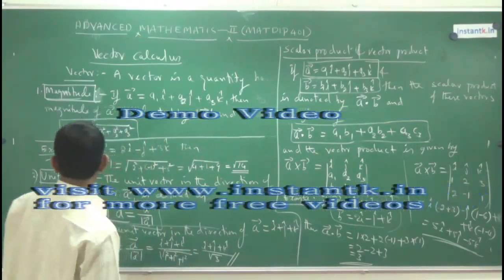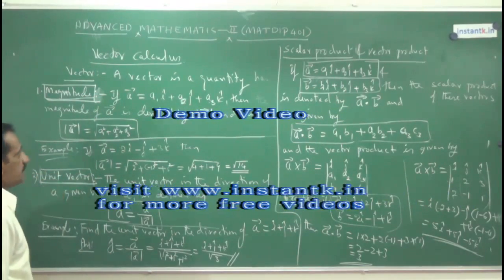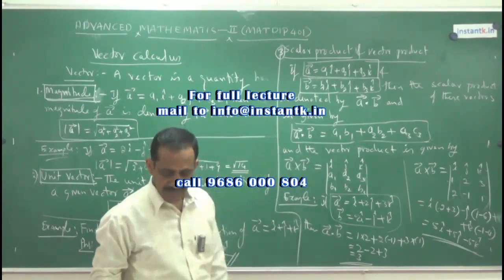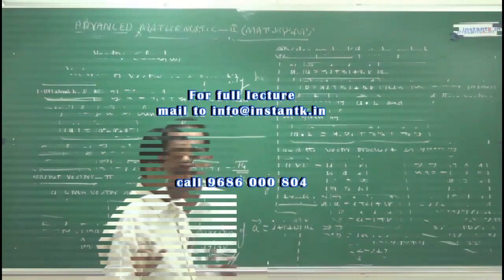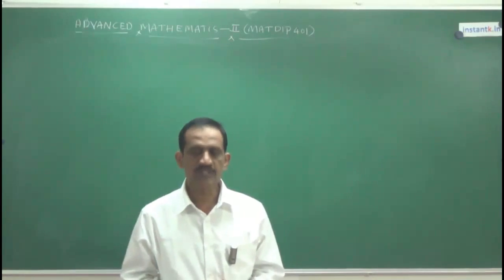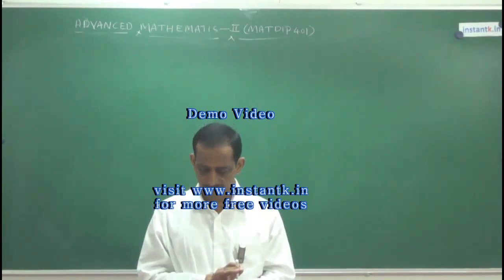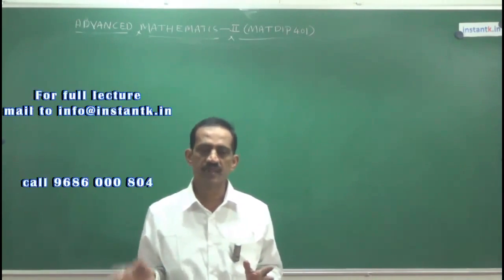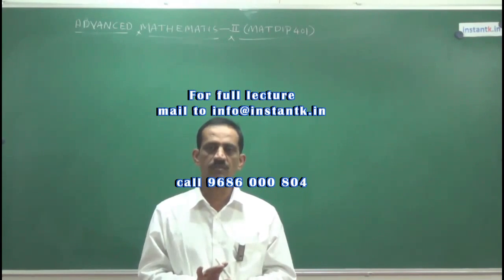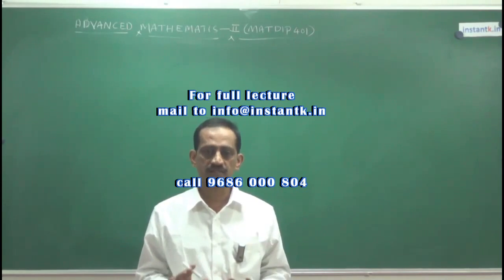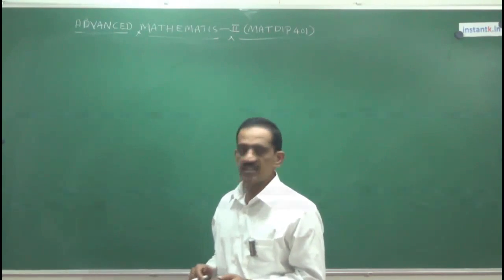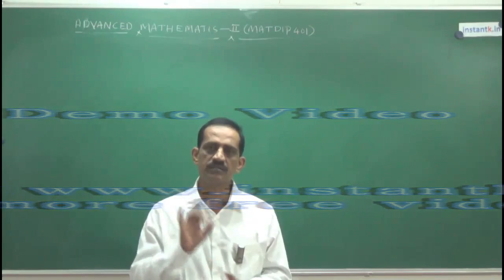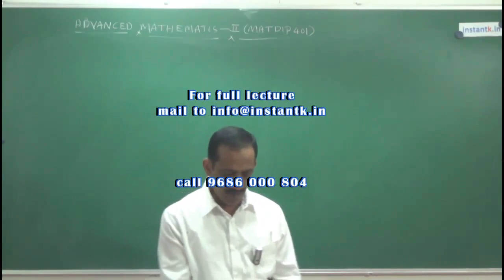There are formulas to remember: magnitude, unit vector in the direction of a given vector, and scalar and vector products of two vectors. We have also seen how to find the velocity and acceleration of a moving particle, the component of velocity and acceleration in a given direction, what gradient means, how to get the normal vector to a given surface, the angle between two surfaces, and the directional derivative. From this part also, one 20-mark question may be asked.